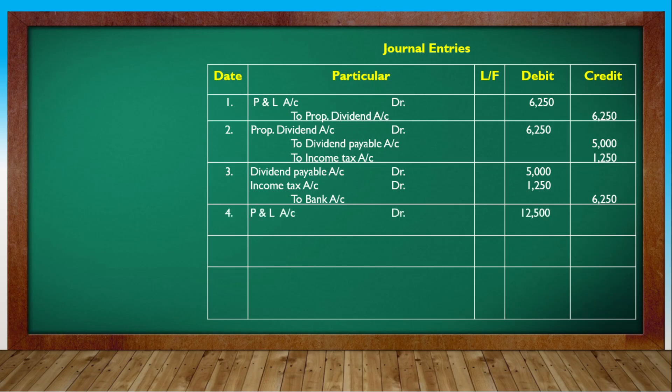Entry for bonus: P&L Account debit to Bonus to Shareholders Account. Bonus declared - that is the entry. Then Bonus to Equity Shareholders Account debit to Equity Share Capital Account.